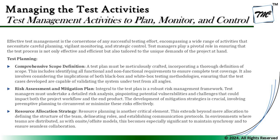When it comes to test planning, the key major activities are: comprehensive scope definition, risk assessment and mitigation plan, and resource allocation strategy. For scope definition, a test plan must be meticulously crafted incorporating a thorough definition of scope. This includes identifying all functional and non-functional requirements to ensure complete test coverage, and considering the implications of both black-box and white-box testing methodologies, ensuring test cases are capable of validating the system from all angles. It's important for a manager to plan for all things which are part of the scope.